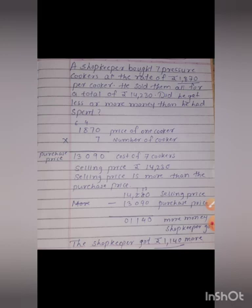Now, 14,230 selling price minus 13,090 purchase price. 0 minus 0, 0. 13 minus 9. 3 minus 9 is not going. Borrow from 100 place. 13 minus 9, 4. Now 100 place remaining 1. 1 minus 0, 1. 4 minus 3, 1. 1 minus 1, 0.